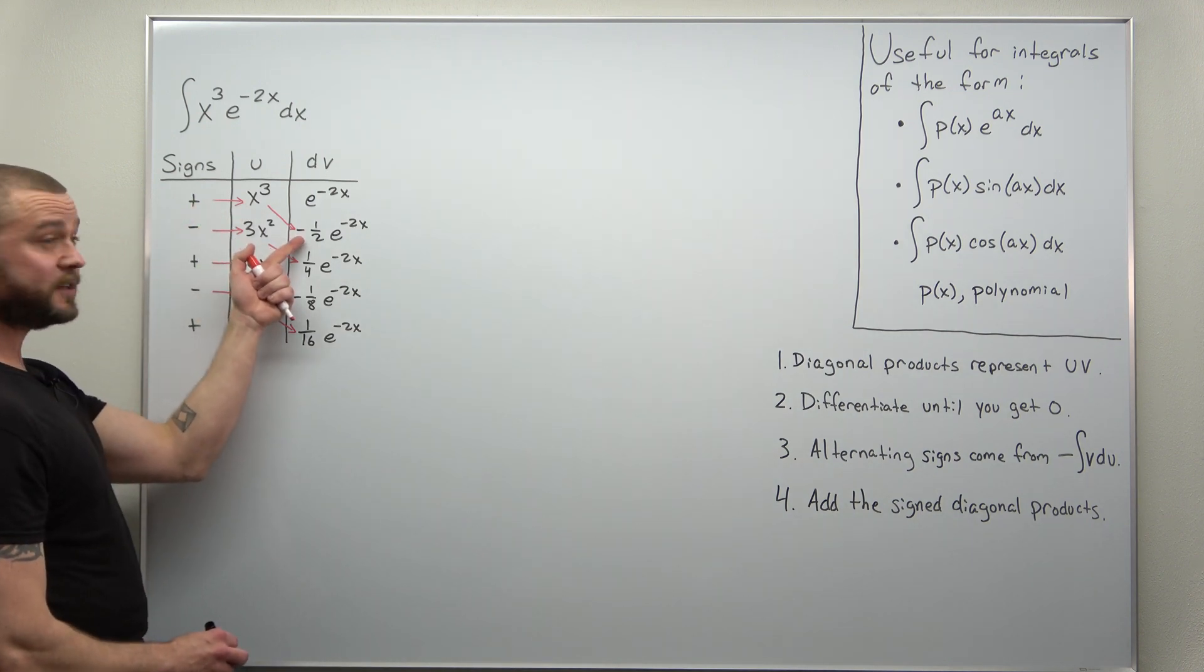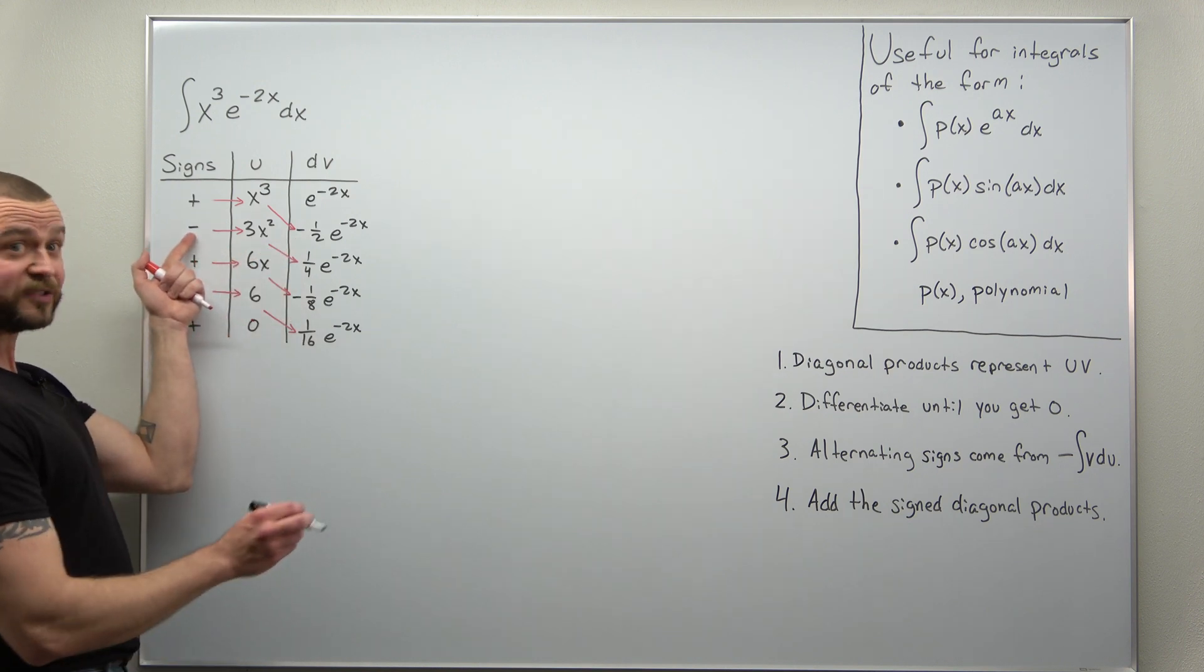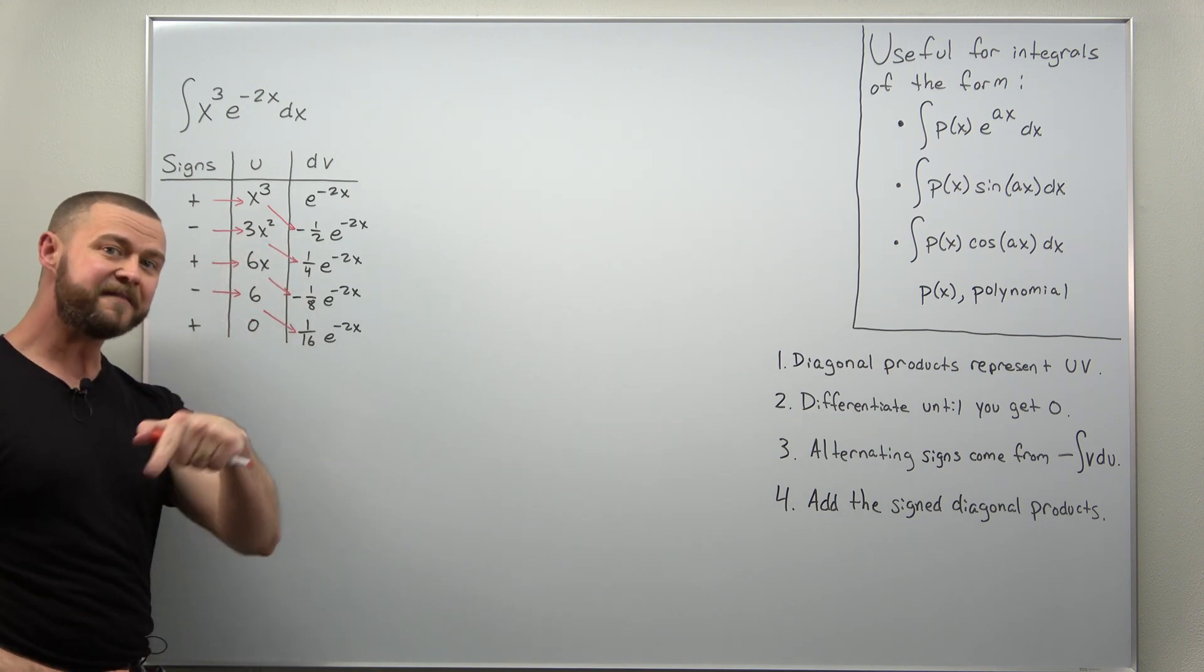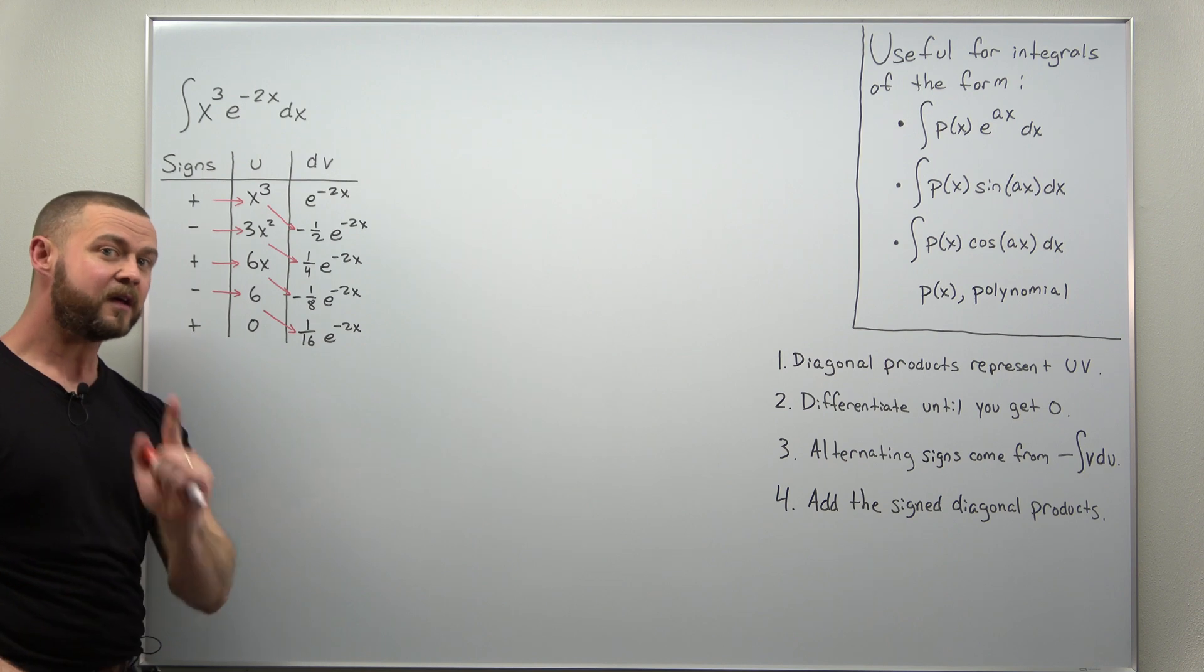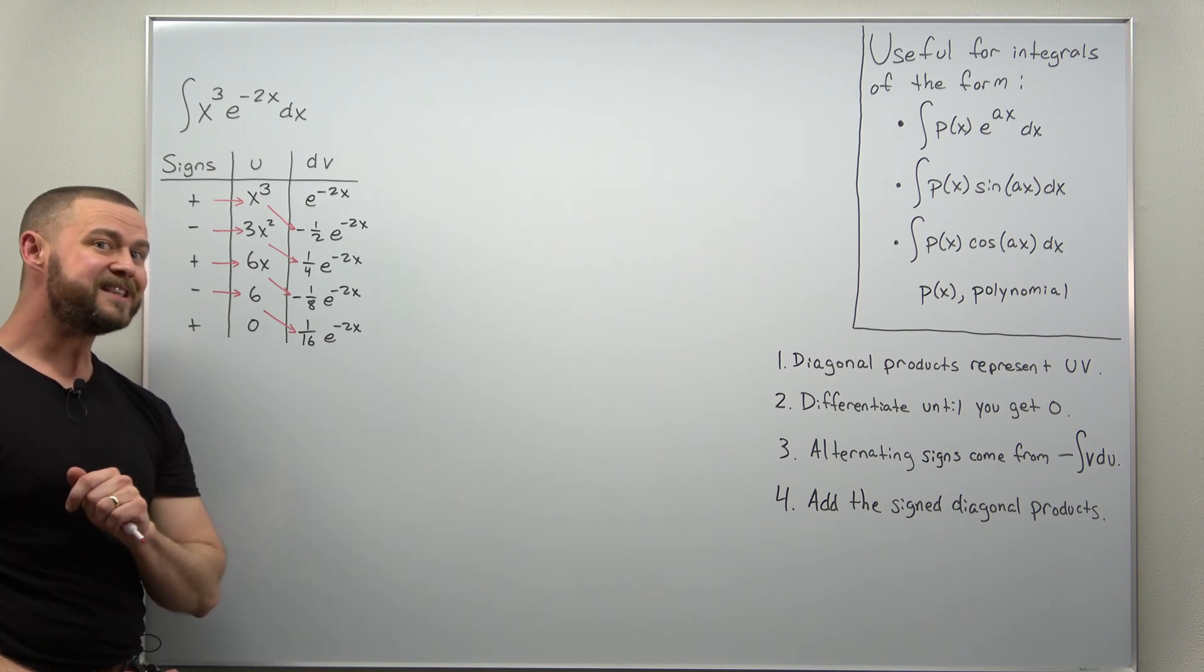Either that appears in the dv column or in the signs column. So let's go ahead and factor out a negative times e to negative 2x.